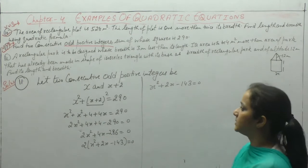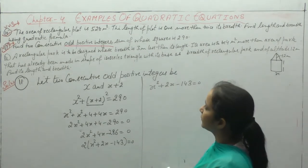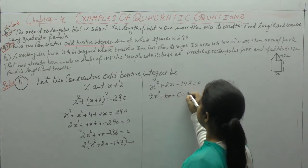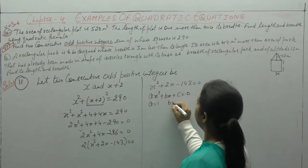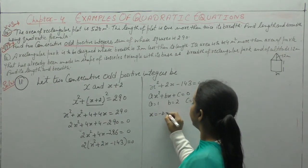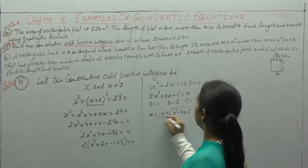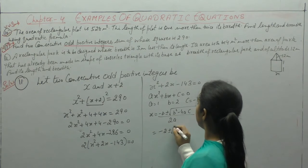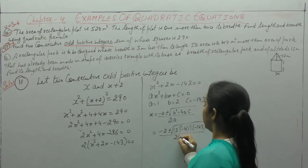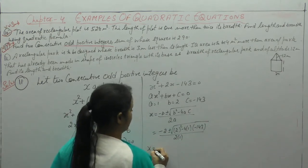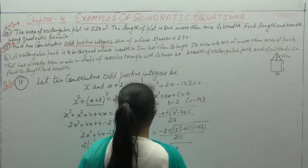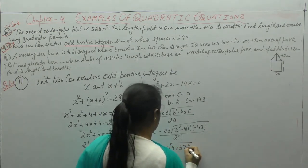Now we solve this using the quadratic formula. Compare with ax² + bx + c = 0: a=1, b=2, c=−143. Applying x = (−b ± √(b²−4ac)) / 2a: x = (−2 ± √(4 + 572)) / 2 = (−2 ± √576) / 2. To find √576: making pairs — 2×2=4; 44×4=176; so √576 = 24.